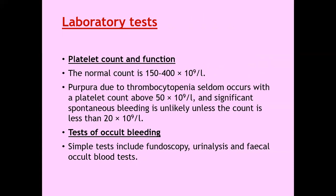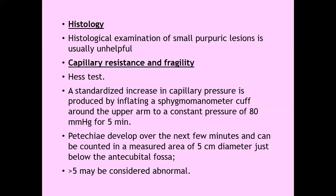Laboratory tests. The normal platelet count is 150 to 400 × 10⁹ per litre. Purpura due to thrombocytopenia seldom occurs with platelet count above 50 × 10⁹ per litre, and significant spontaneous bleeding is unlikely unless the count drops to 20 × 10⁹ per litre. Tests of occult bleeding include fundoscopy, urine analysis, and fecal occult blood tests. Histological examination of small purpuric lesions is usually unhelpful; however, larger purpuric lesions will show features including extravasation of RBCs.